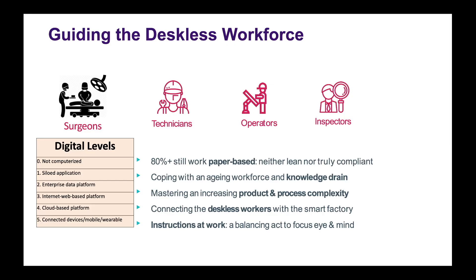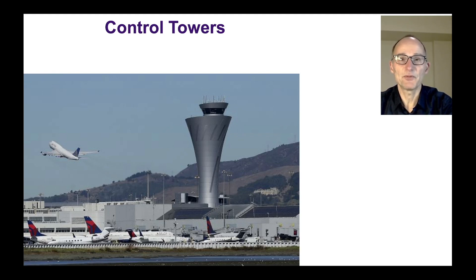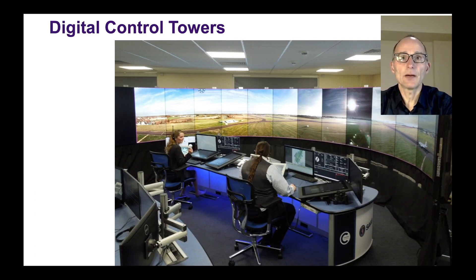Yet the ultimate dream of digital operations is to also connect all machines, devices, and even people to the data platform — we refer to that as level five. A nice example of digital level five can be viewed from the aspect of a control tower, which we're all familiar with at the airport. This control tower can now be digitized, and we talk about a digital control tower which gives you full visibility over all workflows.